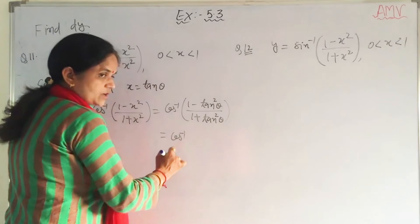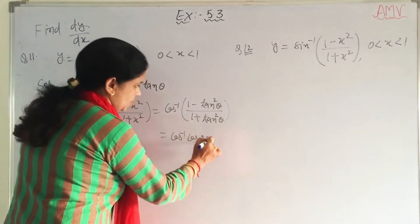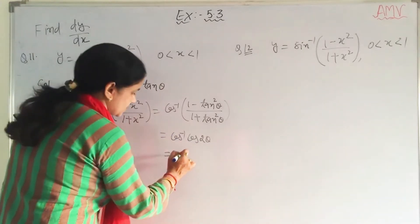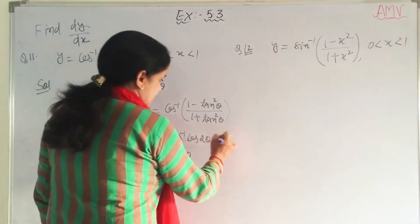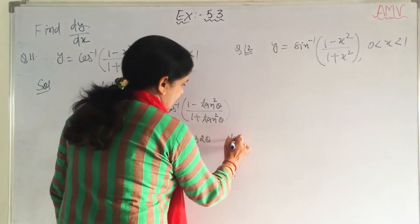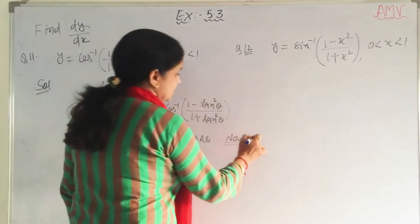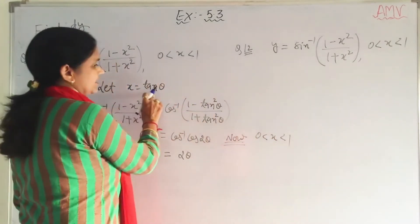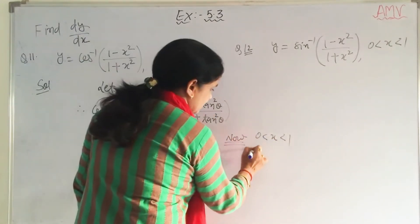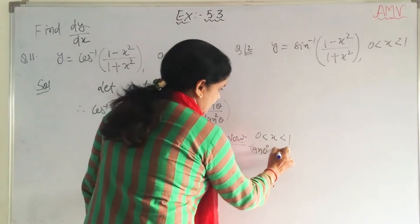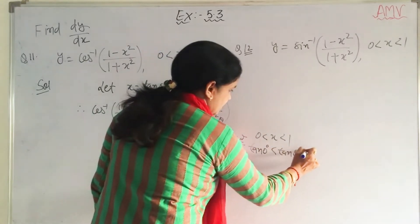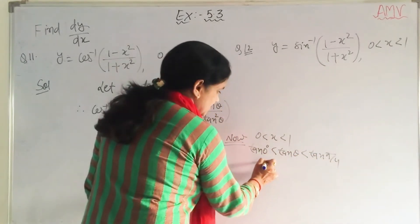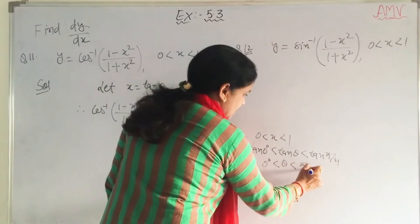It is cos inverse cos 2 theta. Now, cos inverse cos 2 theta gives 2 theta. But here, it is given 0 is less than x is less than 1. In place of x we are taking tan theta, so 0 is the value of tan 0, and 1 is tan pi by 4. So theta is between 0 and pi by 4.